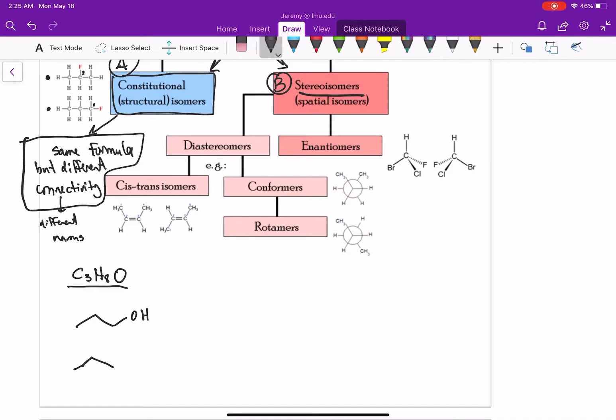We could have the OH coming off carbon two. So that first compound is one propanol. The second compound would be two propanol.